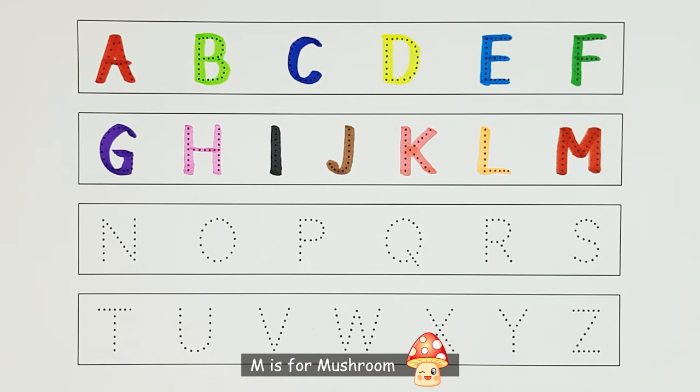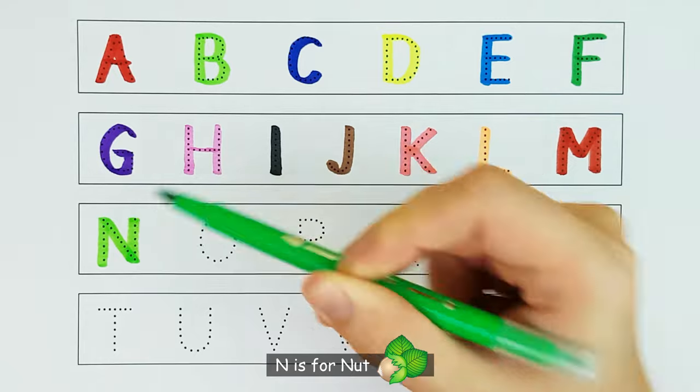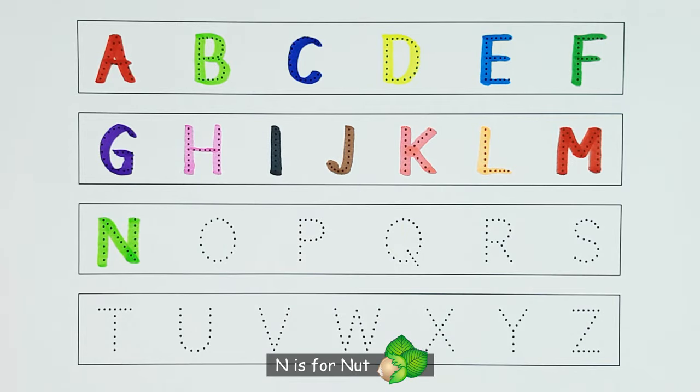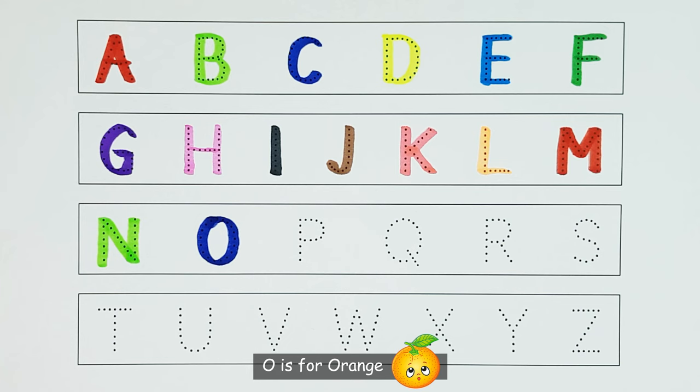M. M is for mushroom. M. N. N is for nut. N. O. O is for orange. O.